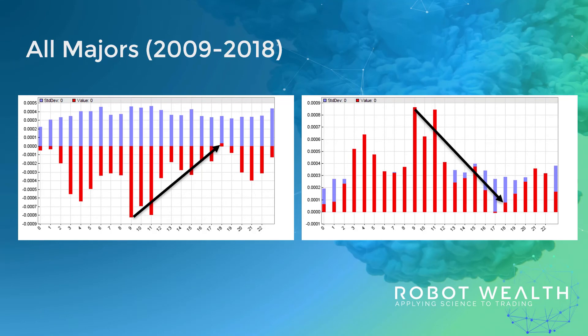We see that broad seasonal momentum reversal effect when we look at these seven pairs in aggregate, which is extremely promising. There's clearly been a very large and persistent effect here, but intraday strategies are very expensive to trade. So are we going to be able to trade this at a retail FX broker? Time to do some backtesting.